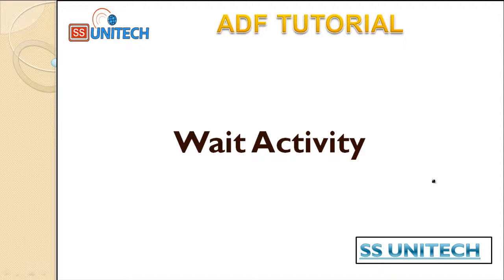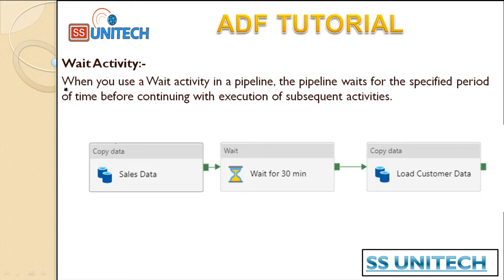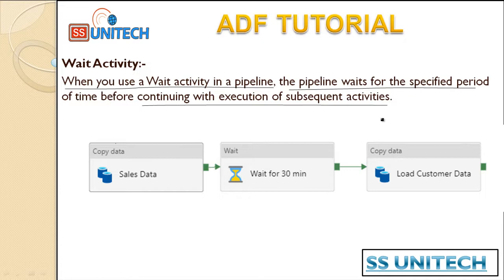Welcome to SSUnitech Social. Today we are going to start with the Wait activity. When you use the Wait activity in a pipeline, the pipeline waits for the specified period of time before continuing the execution of the subsequent activities. So if you are using the Wait activity and supplying some time, your pipeline will be paused, and after that time completes, the pipeline will start executing again.